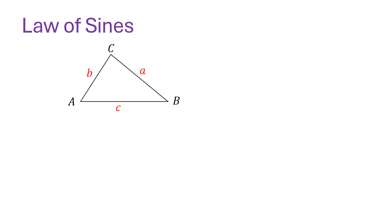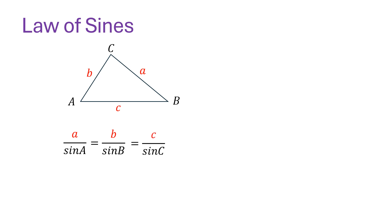In this triangle we have angles A, B, and C, and the lengths of the sides are denoted by small letters a, b, and c. According to the Law of Sines, if you divide the length a by the sine of angle A (which is opposite to side a), it is equal to b divided by sine of angle B, and also equal to c divided by sine of angle C.